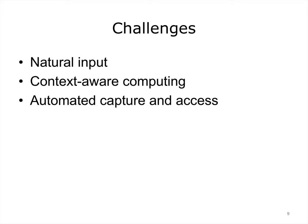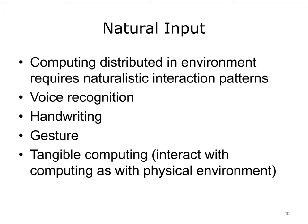The vision of ubiquitous computing implies many computing devices distributed or embedded in the environment. This presents a number of challenges as well as new opportunities to assist individuals in their activities. The three we will discuss include their reliance on natural input, their opportunity to enable context-aware computing, and automated capture and access. Because ubiquitous computing is distributed in the environment, the more traditional interaction modalities may not be available. For example, it is hard to imagine using keyboards or mice with smart everyday objects. Humans are used to interacting with our social and physical environments without relying on keyboards or mice, so there is an opportunity to adapt more natural input techniques.